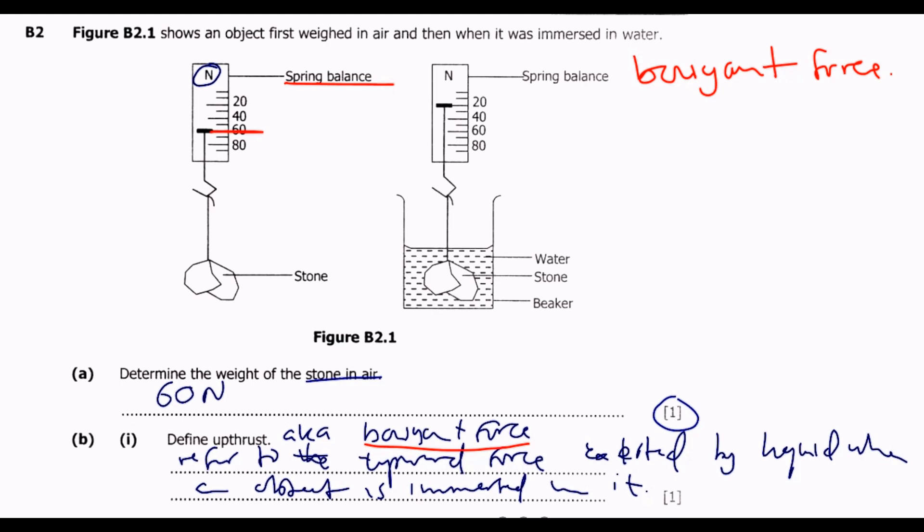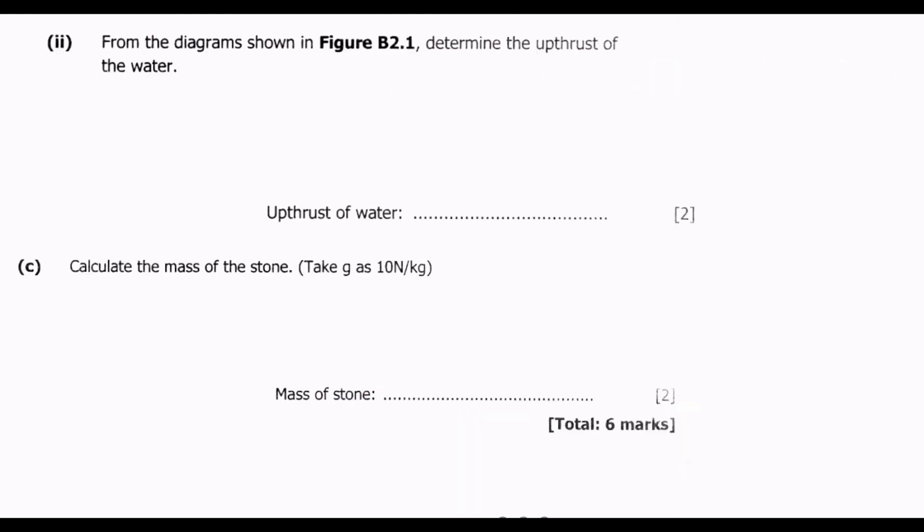Part B, Roman numeral 2: from the diagrams shown in Figure B2.1, determine the upthrust of the water. This is what we are required to do - to determine the upthrust of the water, which is the buoyant force of water. The key is understanding the Archimedes principle, which states that the upthrust force is due to differences of pressure between the lower and upper surfaces of the immersed object in that particular fluid.